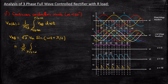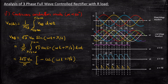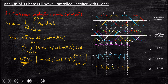Substituting the terms, with lower limit pi/6+alpha and upper limit pi/2+alpha, VAB is root(3)·Vm·sin(omega·t + pi/6). This gives us (3·root(3)·Vm)/pi times the integral of sine, which yields minus cos(omega·t + pi/6), evaluated with lower limit pi/6+alpha and upper limit pi/2+alpha. Now let us apply the upper and lower limits, continuing on the next page.